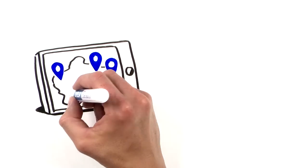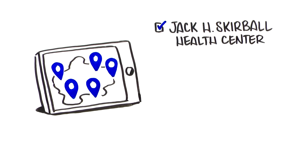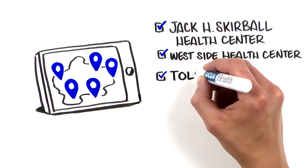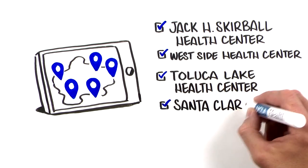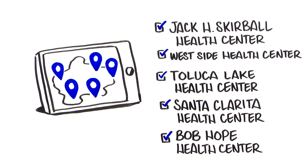The five health offices are Jack H. Skirball Health Center in Woodland Hills, Westside Health Center, Toluca Lake Health Center, Santa Clarita Health Center, and Bob Hope Health Center in Mid-City.